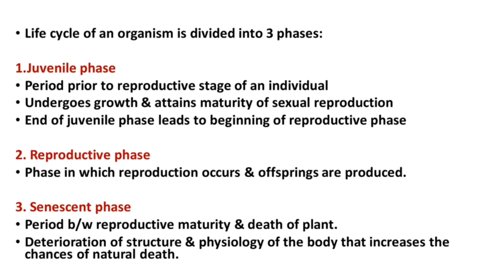Senescence involves deterioration of the structure and physiology of the body that increases the chances of natural death. So the three phases are: juvenile phase, reproductive phase, and senescence phase.